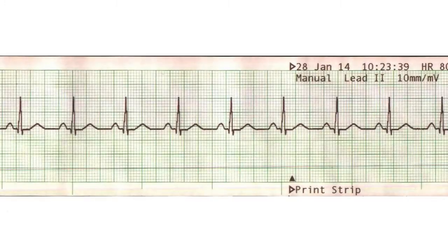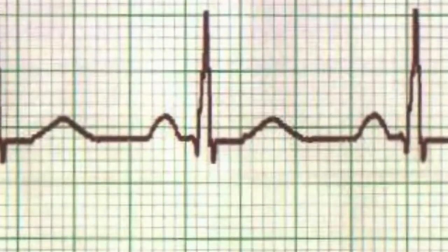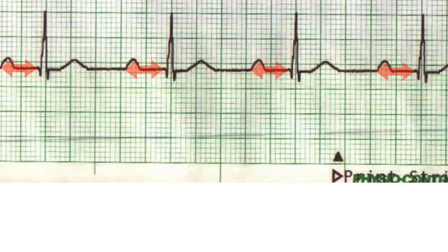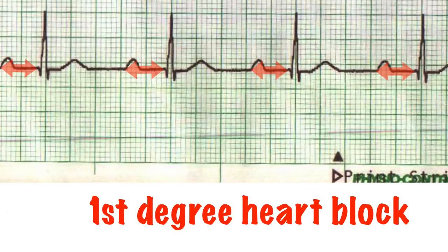Normally there should be a P wave before every QRS complex. The gap between the beginning of the P wave and the start of the QRS complex — the PR interval — should not be greater than 0.2 seconds, or five small squares. A regular prolonged gap of more than 0.2 seconds means the AV node is holding onto the impulse for a little too long, and this causes first degree heart block.